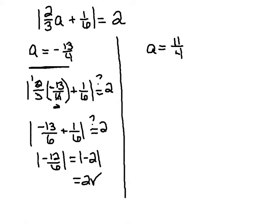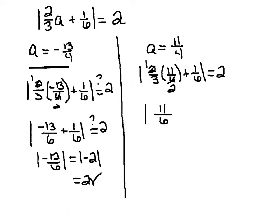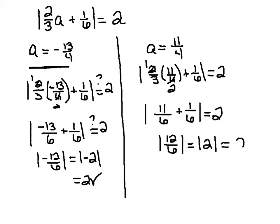Now checking a equals 11 fourths by substituting into the absolute value equation. 2 thirds times 11 fourths equals 11 sixth, so we have the absolute value of 11 sixth plus 1 sixth equals 2. 11 sixth plus 1 sixth is 12 sixth, and the absolute value of 12 sixth is the absolute value of 2, which is indeed equal to 2. This verifies that 11 fourths is also a solution to our absolute value equation.